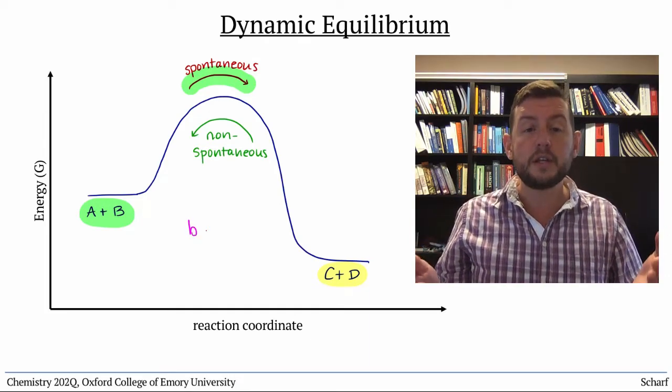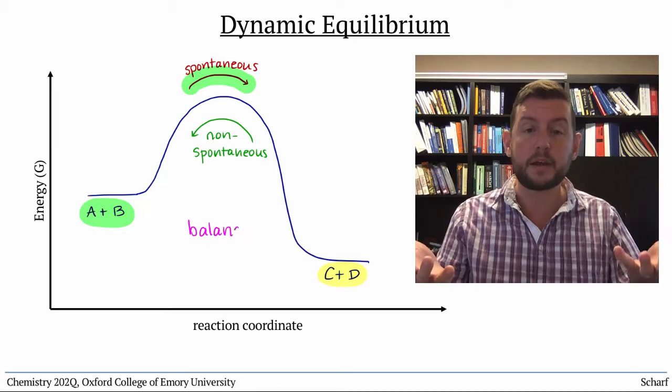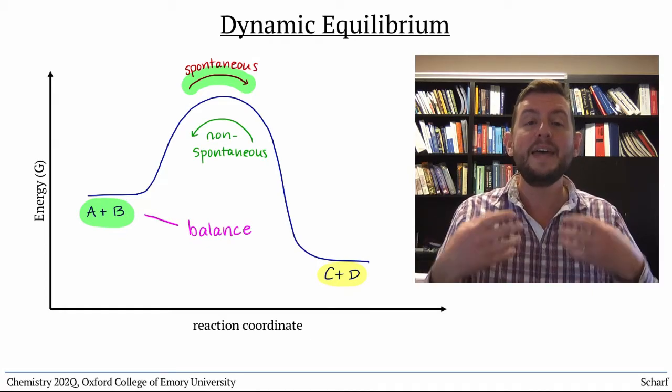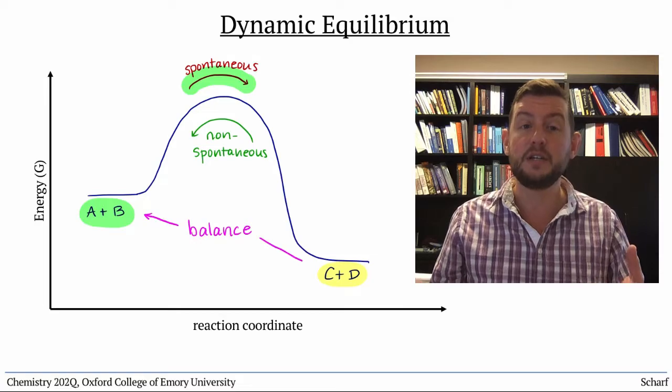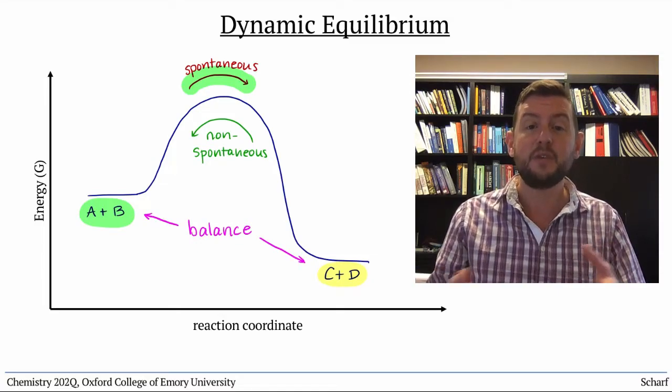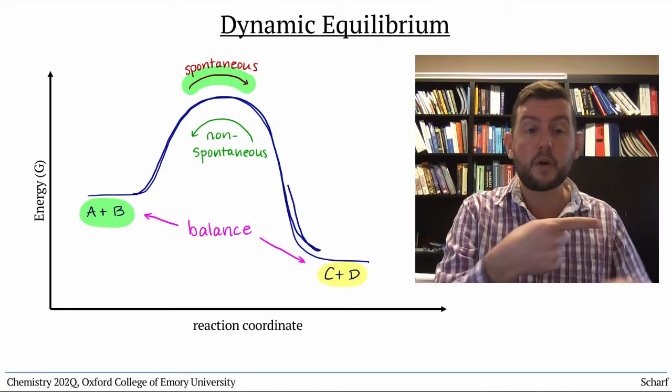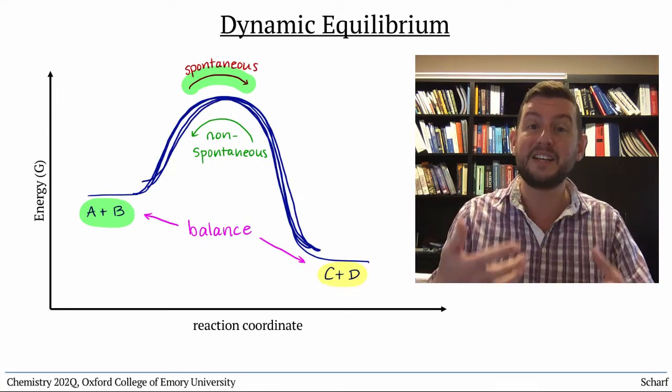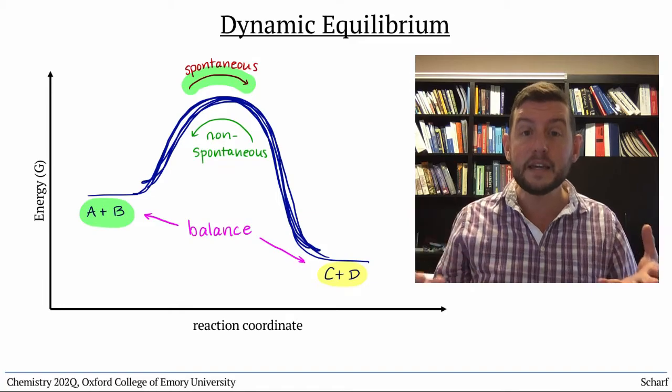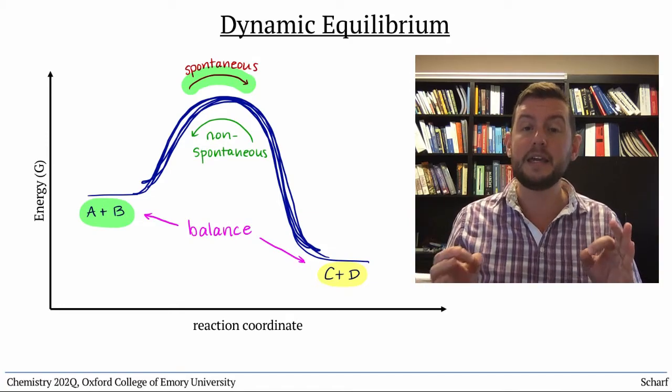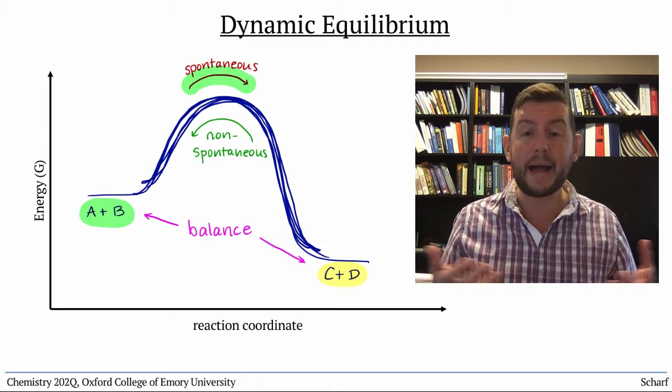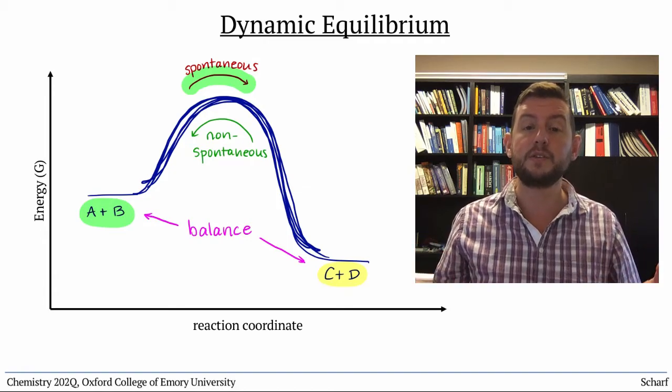Eventually, the system of reactants and products reaches a point where the net concentrations of products and reactants remain constant, even though both the forward and the reverse reactions are still occurring. This is dynamic equilibrium, a state of balance between starting materials and products.